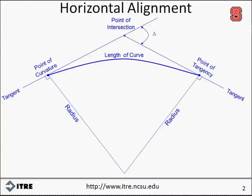Several points of interest along the curve include the location where the tangents intersect, which is known as the point of intersection; the location where the vehicle leaves the tangent section and begins to drive along the curve, which is known as the point of curvature; and the location where the curve ends and the vehicle returns back to the tangent, which is known as the point of tangency.